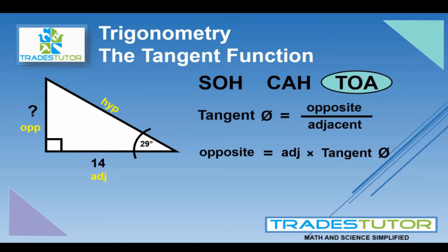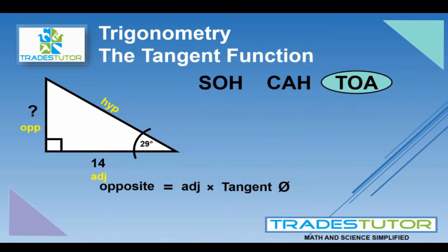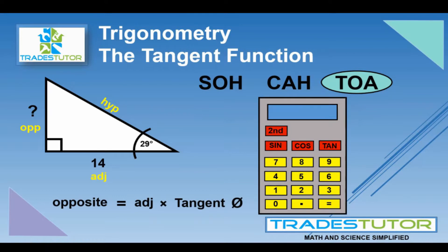The opposite is equal to the adjacent times the tangent. All right, so let's, why don't we move this over here, bring up our calculator. Now, the adjacent we already know - the adjacent is 14, so we can put that in right away. The tangent, on the other hand, we've got to derive. So, you know it's 29 degrees. Plug that in,